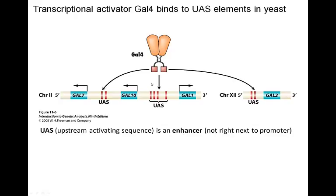A transcriptional activator called GAL4 binds to particular enhancer elements — called upstream activating sequences, or UAS sequences — near each of the gal genes, which are analogous to the structural genes in the lac operon. When GAL4 binds to these UAS enhancer elements, the nearby gal gene is transcriptionally activated and gets transcribed and translated at high levels.